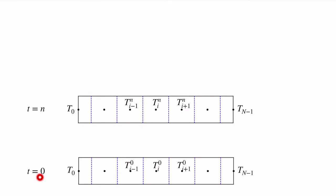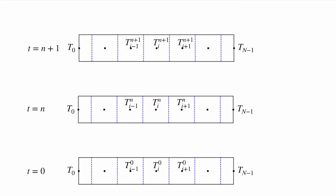To start this problem at time equals zero we're going to need to know the initial condition — the temperature at each point over the entire piece. Once we know that, we can solve for the next time step, and once we know that we can use it to solve for the subsequent time step. So what we're really doing here is solving our system repeatedly, once for each time step.